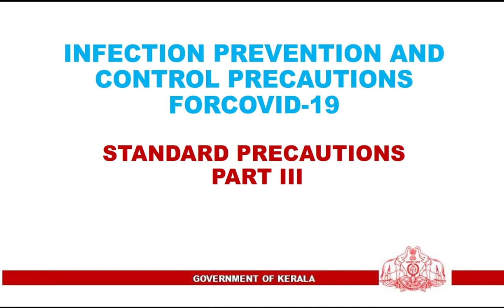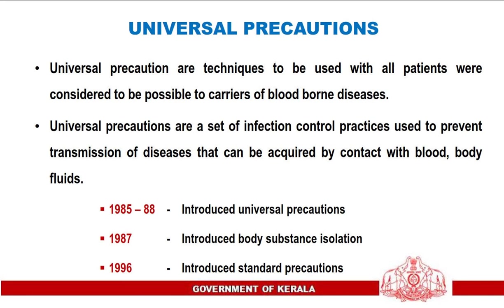Infection Prevention and Control Precautions for COVID-19, Part 3: Standard Precautions. Universal Precautions are the techniques to be used with all patients considered to be possible carriers of blood-borne diseases. Universal Precautions are a set of infection control practices used to prevent transmission of diseases that can be acquired by contact with blood and body fluids.